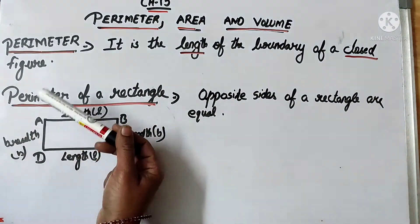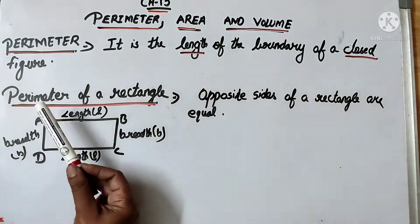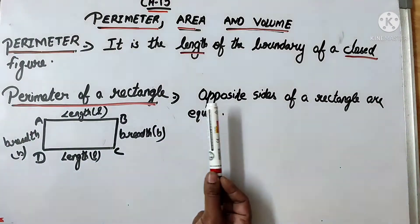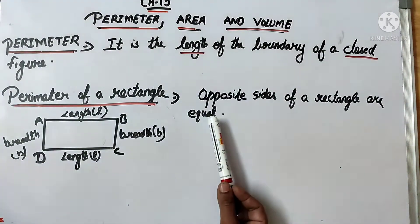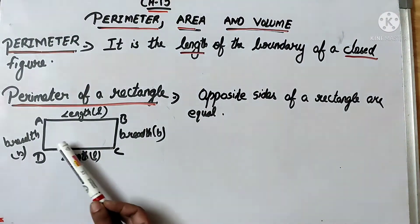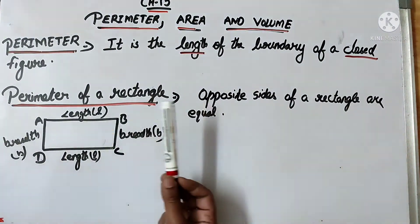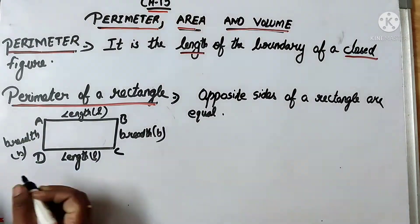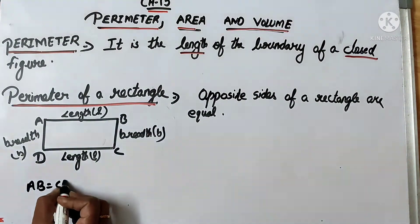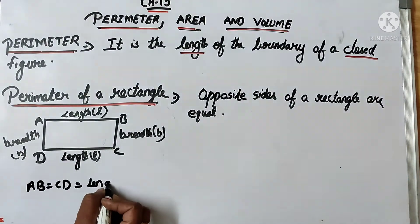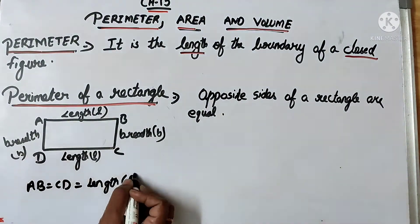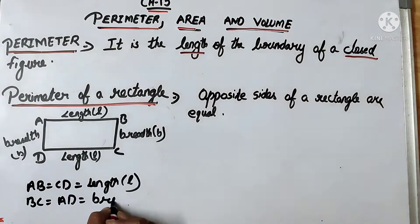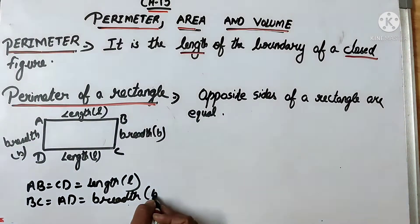Now let us learn about the perimeter of a rectangle and square. In order to find the perimeter of a rectangle, we know that opposite sides of a rectangle are equal. Here I have made one rectangle ABCD. According to the property of the rectangle, opposite sides are equal. So AB is equal to CD, which equals length L.